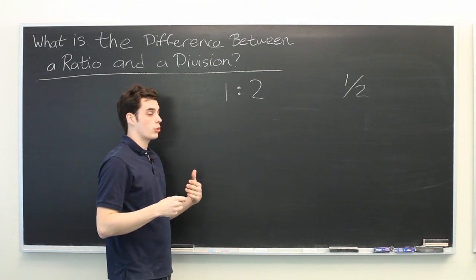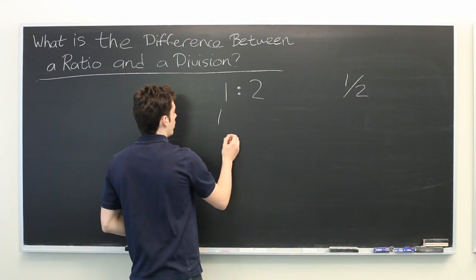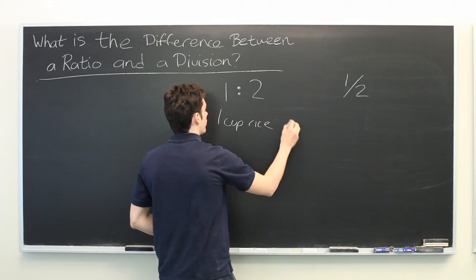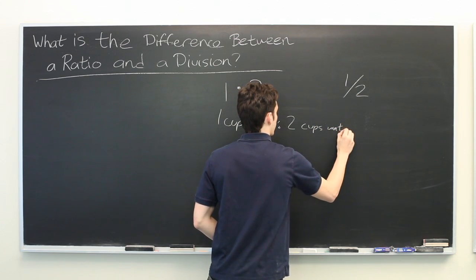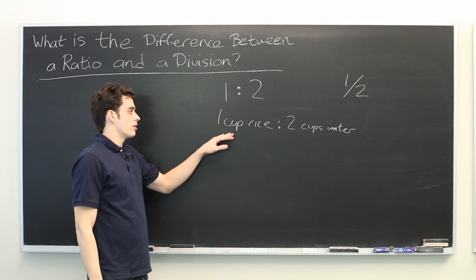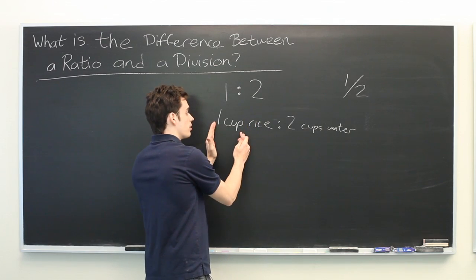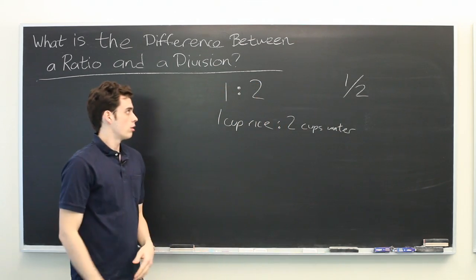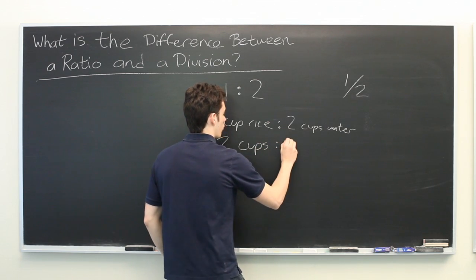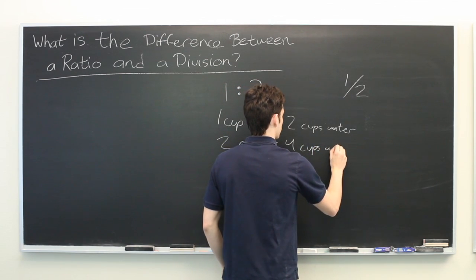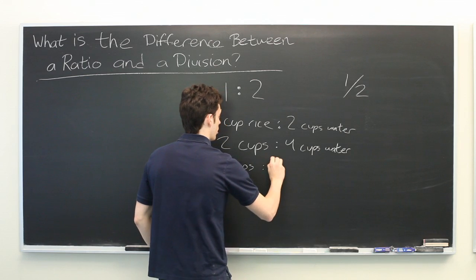For example, let's say you're cooking risotto and you see something like this in the recipe. It might say one cup rice for every two cups water. This represents a relationship between two different quantities. The ratio between the number of cups of rice and the number of cups of water should be one to two, even as the numbers increase — for example, two cups rice to four cups water, or ten cups of rice to twenty cups of water.